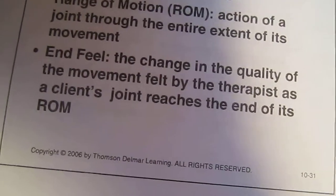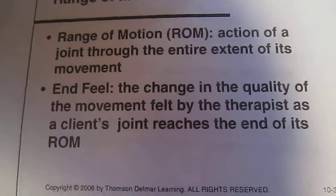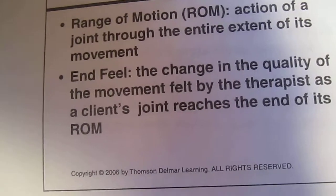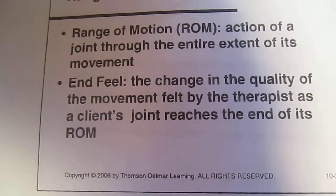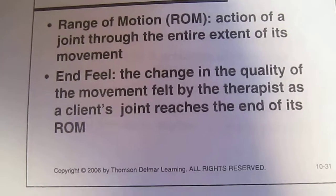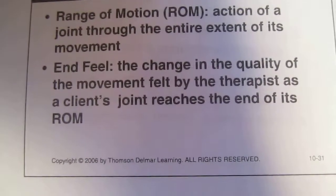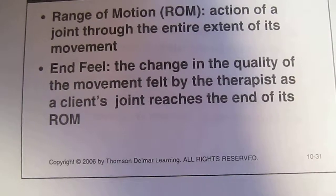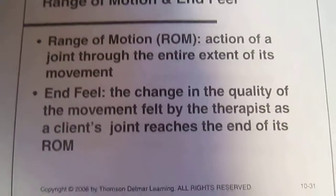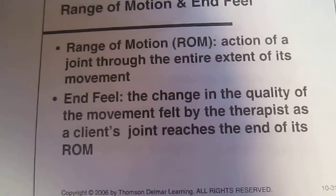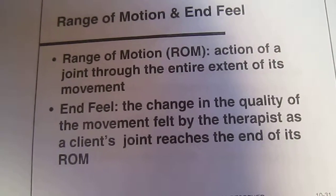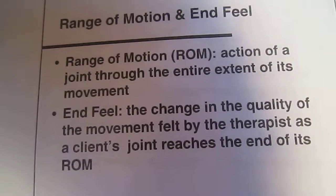Range of motion and end feel. Range of motion refers to the action of a joint through the entire extent of its movement. End feel is the change in quality of movement felt by the therapist as the client's joint reaches the end of the range. End feel is different for everyone. Hard end feel: bone-to-bone feeling. Soft end feel: a cushy, springing feel, as in knee flexion.